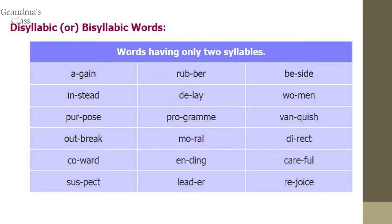Next one is disyllabic or bisyllabic words — that means two syllables. Examples: rubber, beside, instead, women, purpose, program. These are all disyllabic words with two syllables.